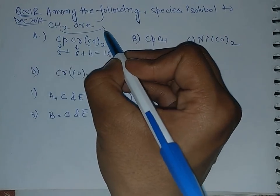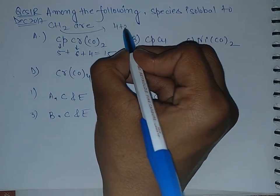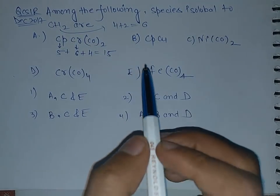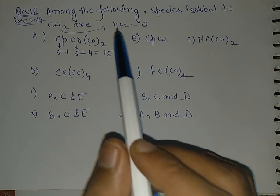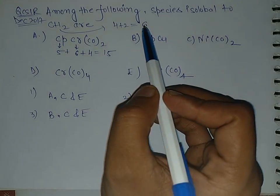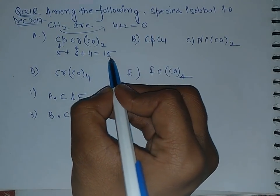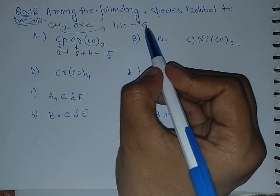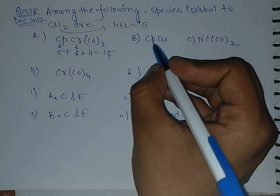Now this CS2 is 4 plus 2 equals 6. In my isolobal analogy video I told you that we have to look at the last digit of transition elements. This is 5 and this is 6, so these are not isolobal.